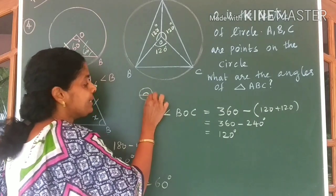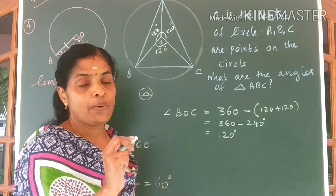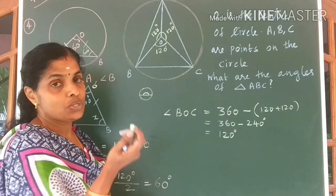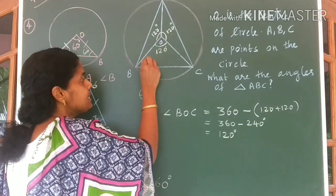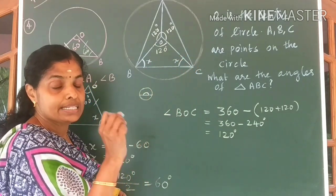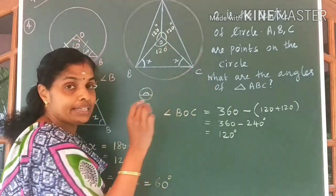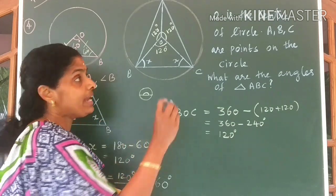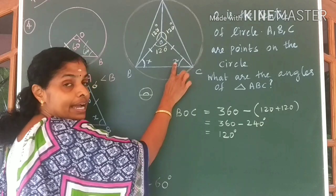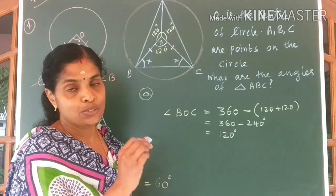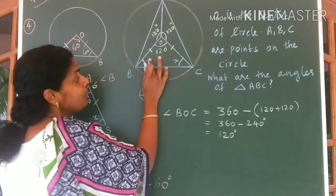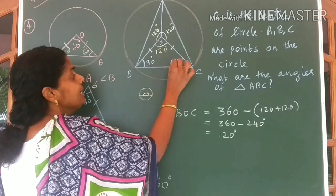Angle around a point: if you keep a point, the angle around that point equals 360 degrees — you get 180 in the top portion and 180 in the bottom portion, so angle around a point is always 360 degrees. Now this angle is 120 degrees. I am marking these two base angles as X and X because OB and OC are radii of the same circle — they are always equal. Hence BOC is an isosceles triangle. Sum of all angles is 180 degrees, so 180 minus 120 gives 60 degrees. 60 divided by 2 gives 30 degrees, so these two angles are 30 degrees each.